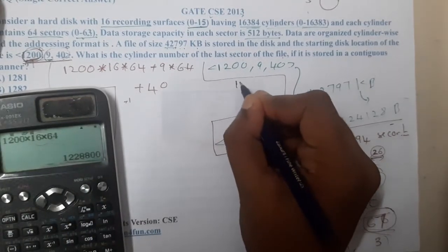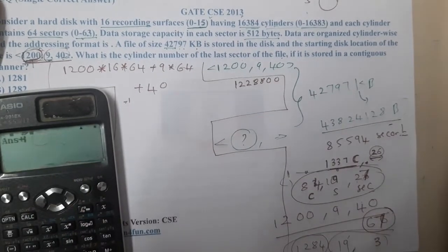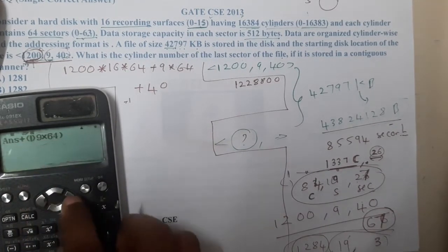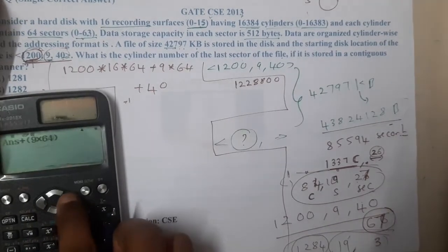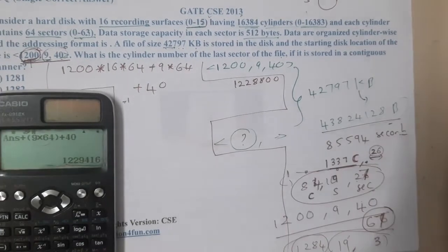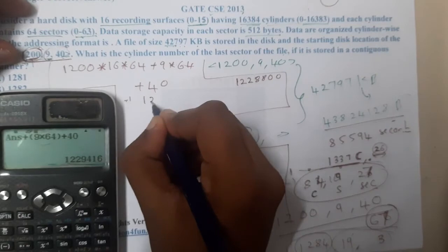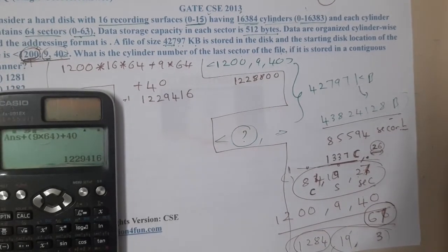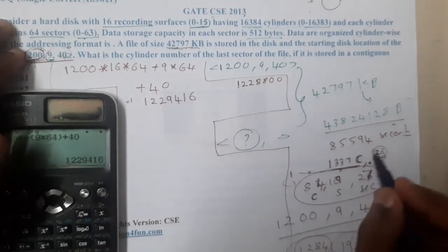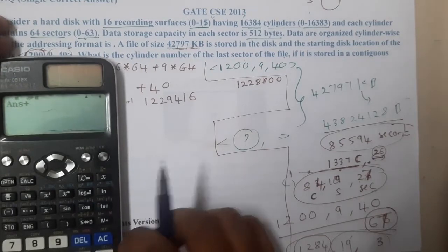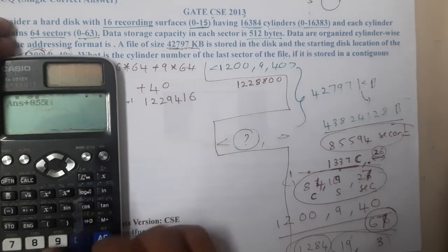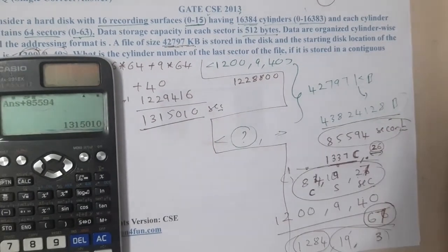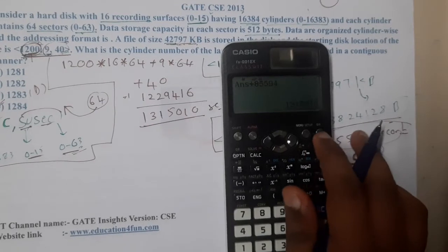Computing: 1200 × 16 × 64 + 9 × 64 + 40 = 1,228,800 + 576 + 40 = 1,229,416 total sectors at the starting address. We add the 85,594 sectors needed for the file: 1,229,416 + 85,594 = 1,315,010. So sector number 1,315,010 is the absolute location of the last sector.